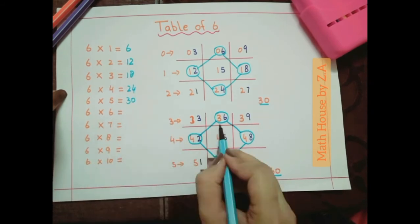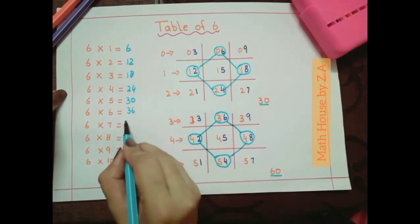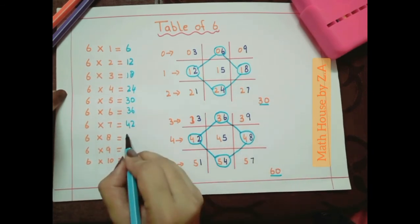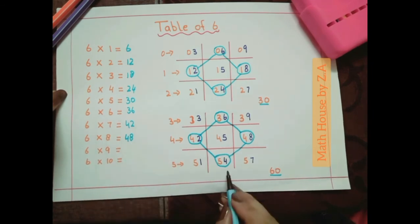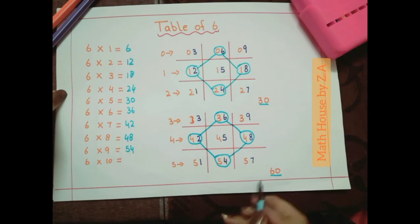6 sixes are 36. 6 sevens are 42. 6 eights are 48. 6 nines are 54. And 6 tens are 60.